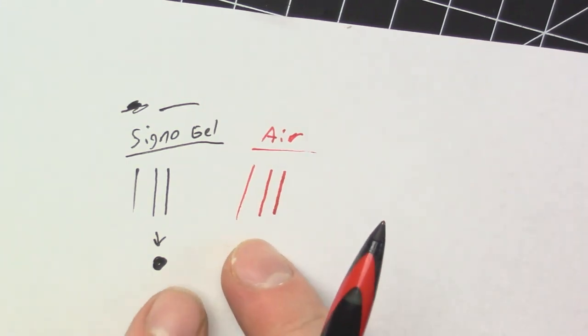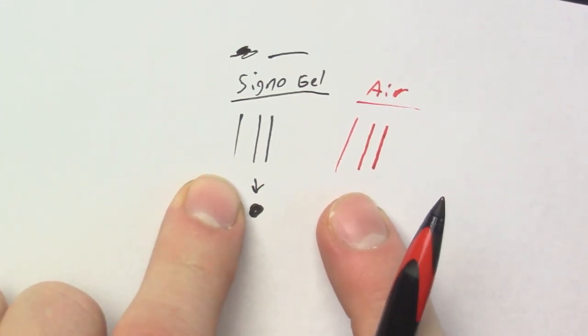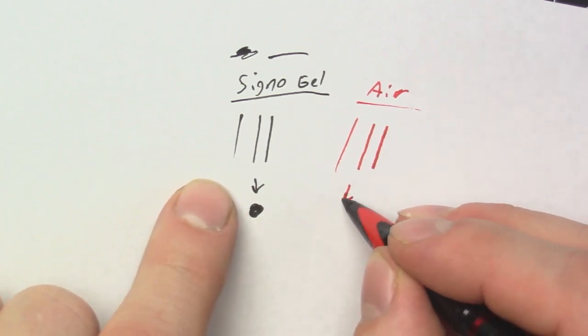The tip on this pen seems to be a little bit bigger than the Gel Signo, and let's go ahead and do the reflection test.